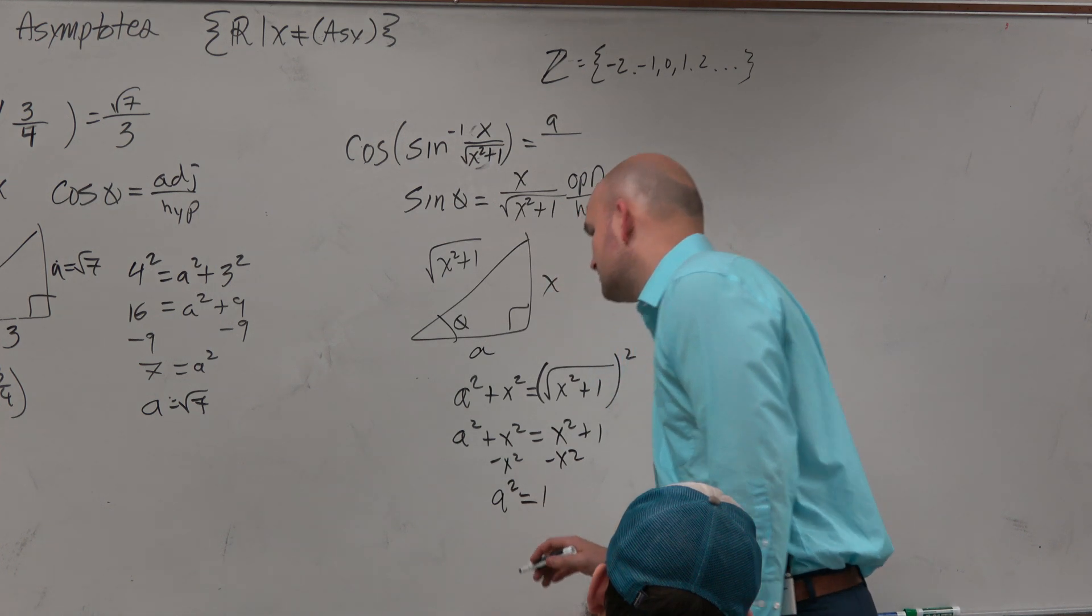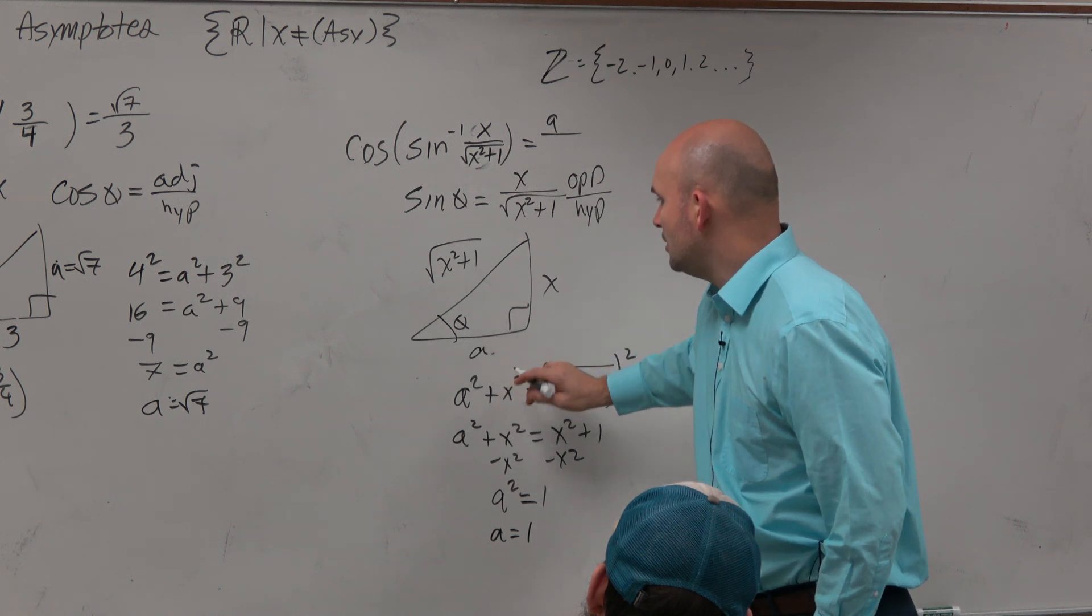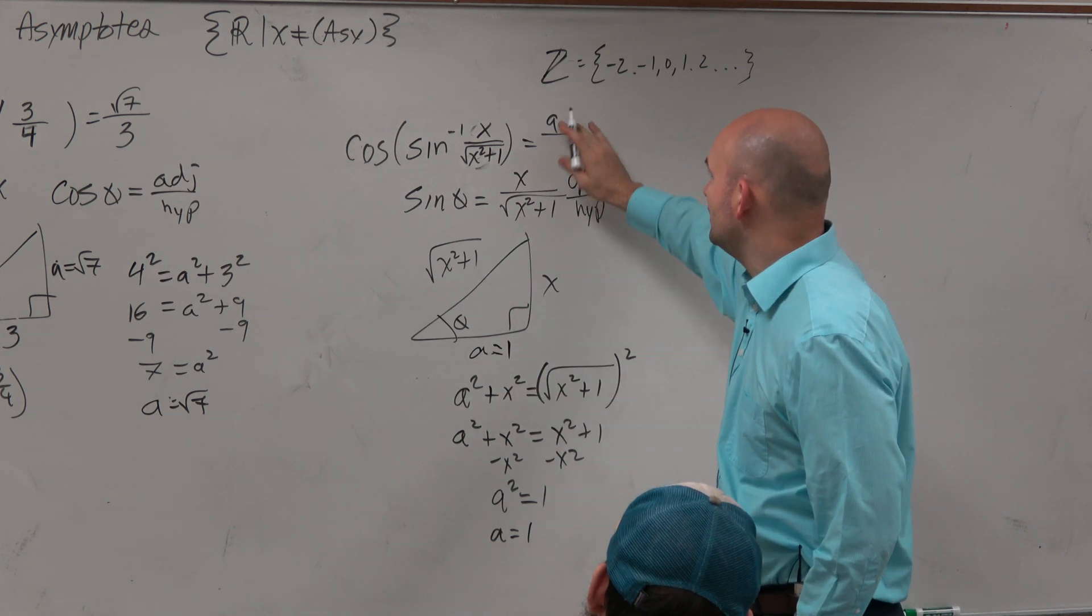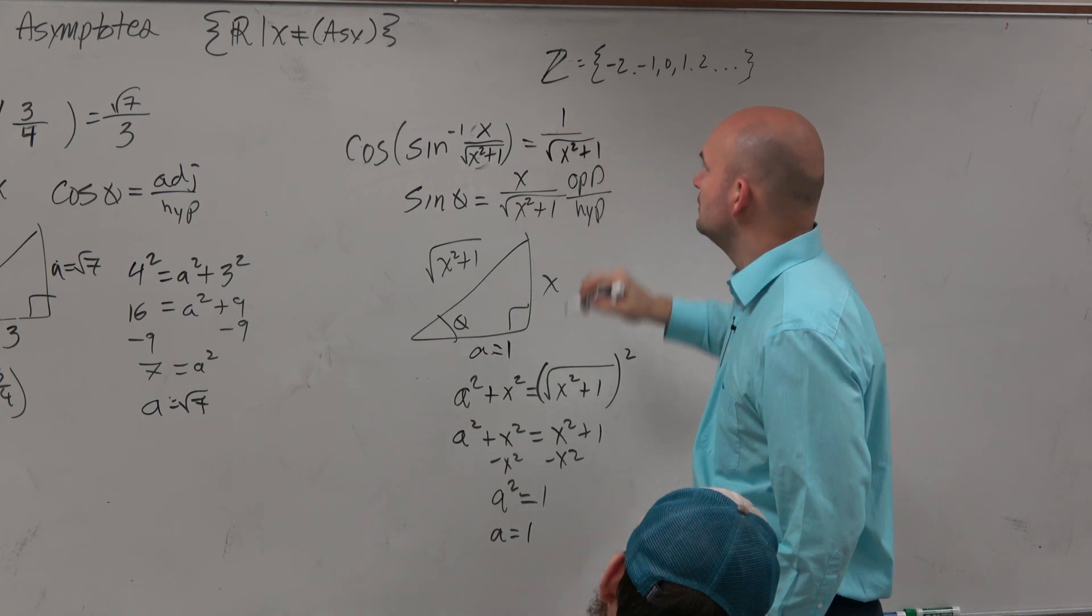A squared is equal to 1. Therefore, a is equal to 1. So we could just say a is equal to 1. And that is your cosine.